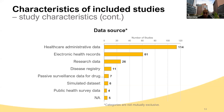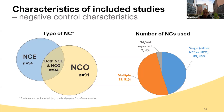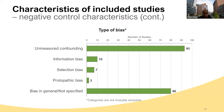In terms of data sources, healthcare administrative data has been used by 114 studies, followed by electronic health record data and research data. 91 studies only used NCO or negative control outcome; 54 studies only used NCE or negative control exposure; and 34 studies used multiple, ideally both NCE and NCO. In terms of the type of bias, most of the studies addressed unmeasured confounding—93 studies—then 10 for information bias, 7 selection bias, 2 protopathic bias, and the others did not specify.